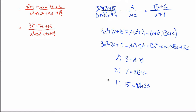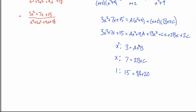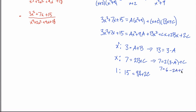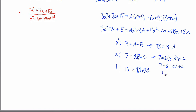Solving this system: take the first equation and solve for b, giving b equals three minus a. Substitute into the second equation: seven equals two times three minus a plus c, which simplifies to seven equals six minus two a plus c. Subtracting six from both sides gives one equals negative two a plus c.